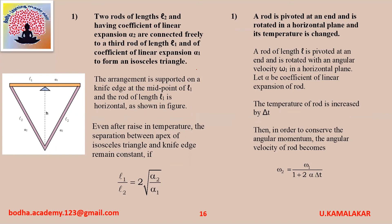Two rods of length L2 and having coefficient of linear expansion alpha2 are connected freely to a third rod of length L1 and coefficient of linear expansion alpha1 to form an isosceles triangle as shown in the figure. The arrangement is supported on a knife edge at the midpoint of L1, with L1 horizontal. Even after rising temperature, the separation between the apex of the isosceles triangle and the knife edge remains constant if L1/L2 equals 2 into square root of (alpha2/alpha1).